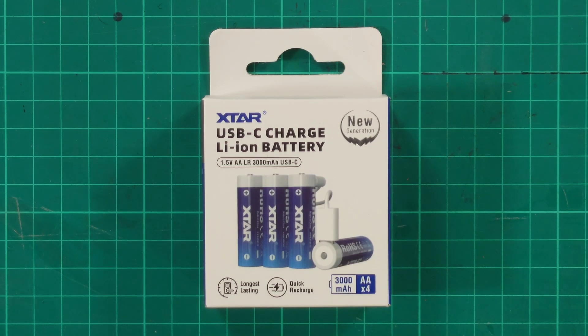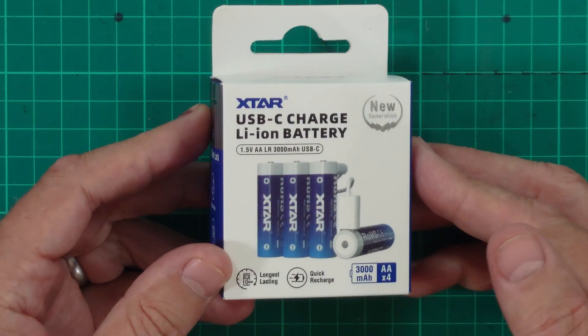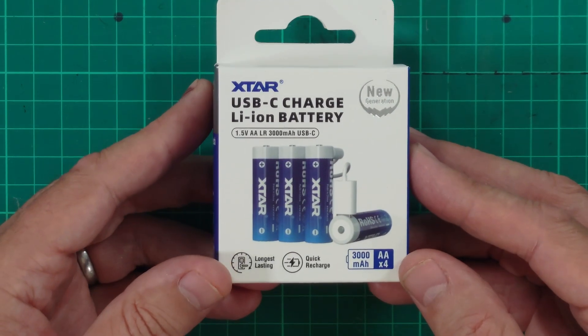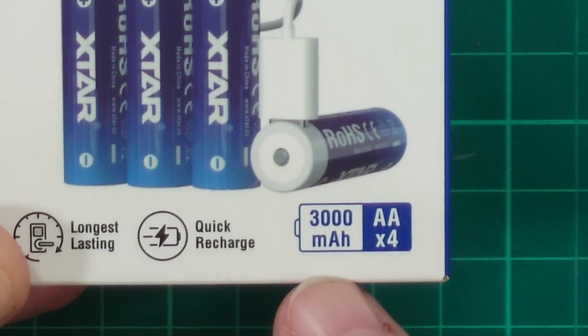So we usually do reviews and demos of synths, but how on earth do you review batteries? Well, okay, let's go. Here's the box, and it tells us that they're rated at 3000 mAh, which is quite a lot for a AA battery.